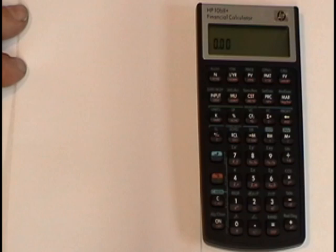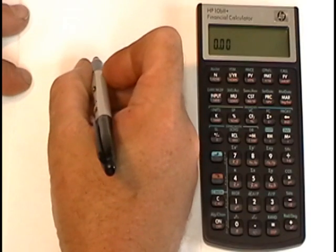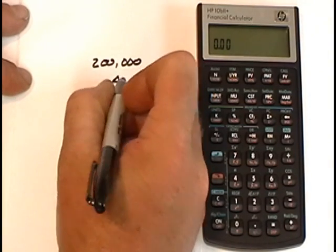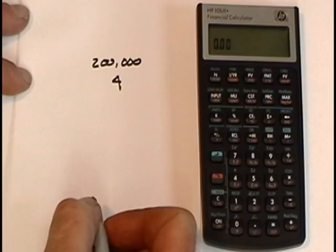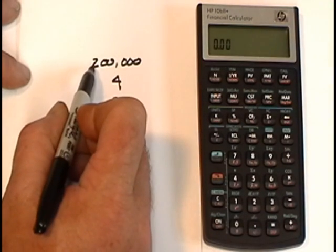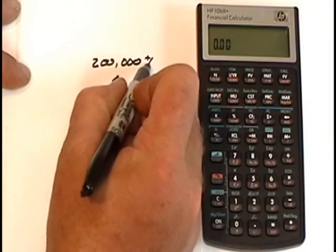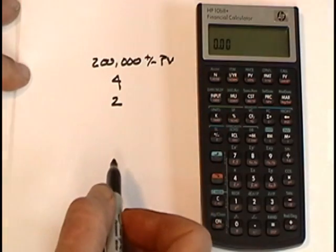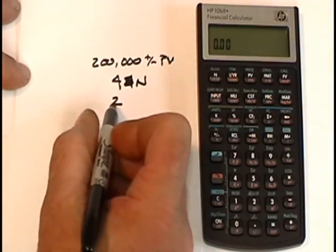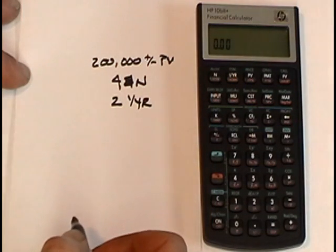So let's look at another time value of money problem, this time measuring price appreciation. Let's say, for example, I buy a piece of property and I'm going to spend $200,000 on it. I'm going to hold the property for four years. And I'm just going to make an assumption that I'll have a rate of price appreciation of about 2% per year. This money, the $200,000, is actually being paid out. So what will happen is this number is going to be entered as a negative because I paid that money out to buy the property. The $4, the term, is going to be entered with gold key N and 2% is the rate. Enter that with the interest per year key.